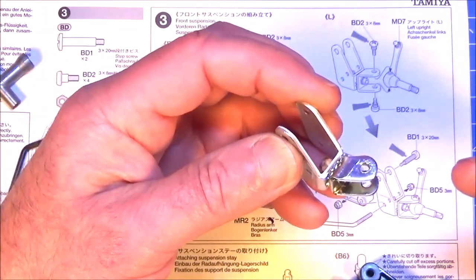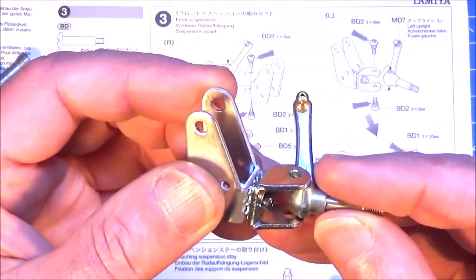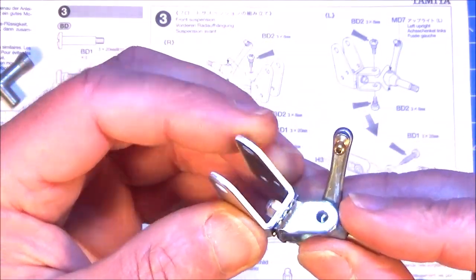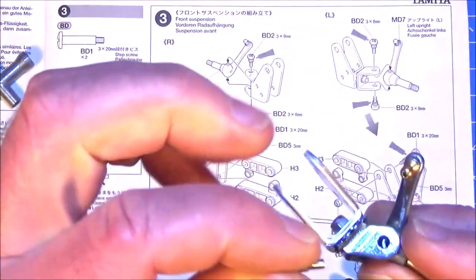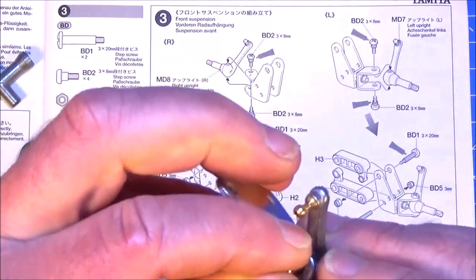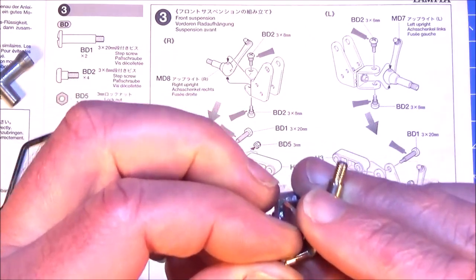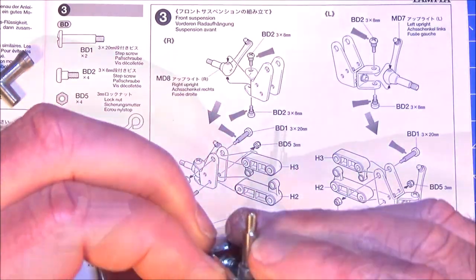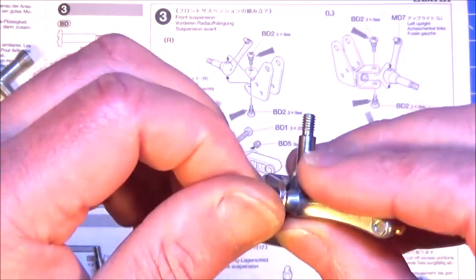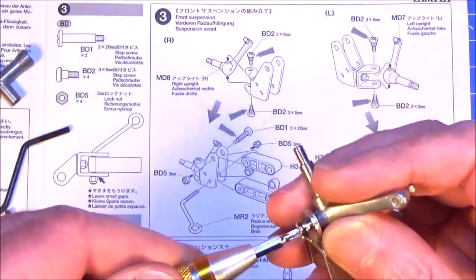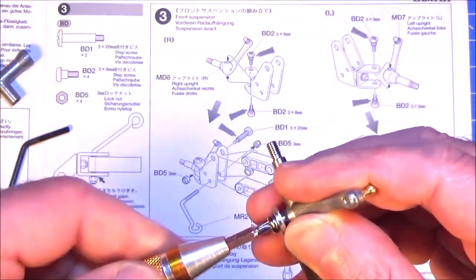And then again following the orientation, get the part we made earlier and your upright is going to go in there like that. Get your small step screw and you screw one in the top and one in the bottom. And I have put a little bit of grease into the holes that these are going into. You don't want too much though.